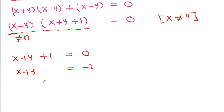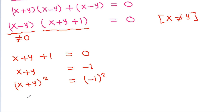If we square both sides, then (x plus y)² is equal to (minus 1)², which gives x² plus y² plus 2xy is equal to 1.